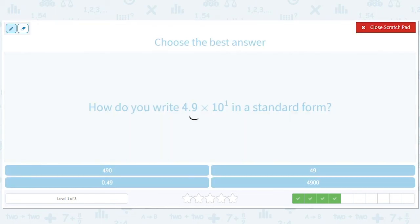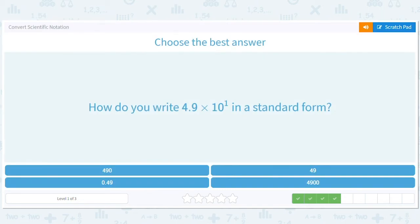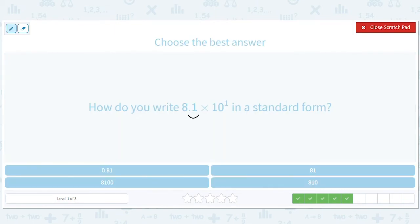4.9, move the decimal place over by 1. You get, that's the 1, right? You get 49. 8.1, move the decimal place over by 1. We get 81.